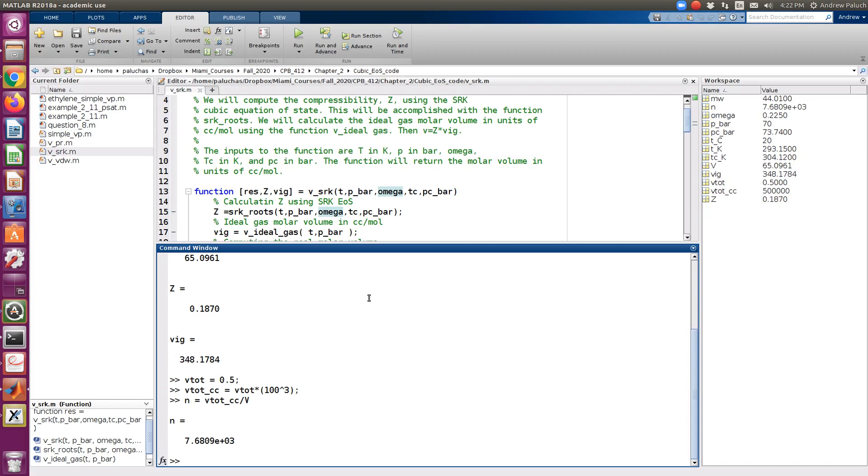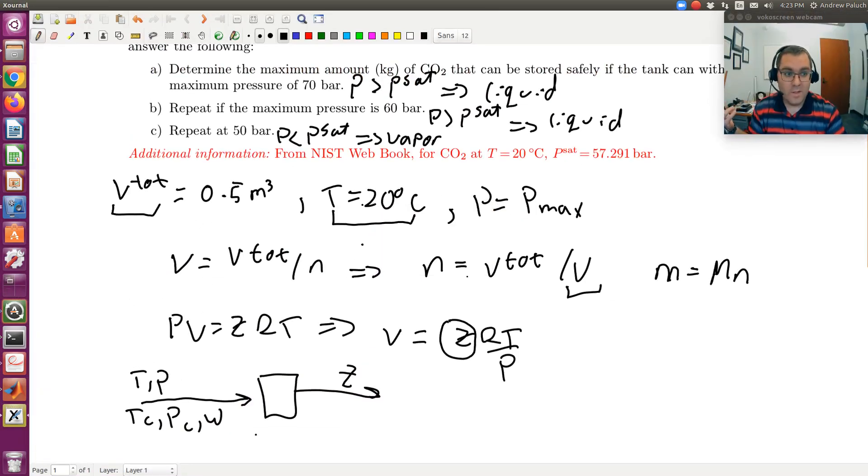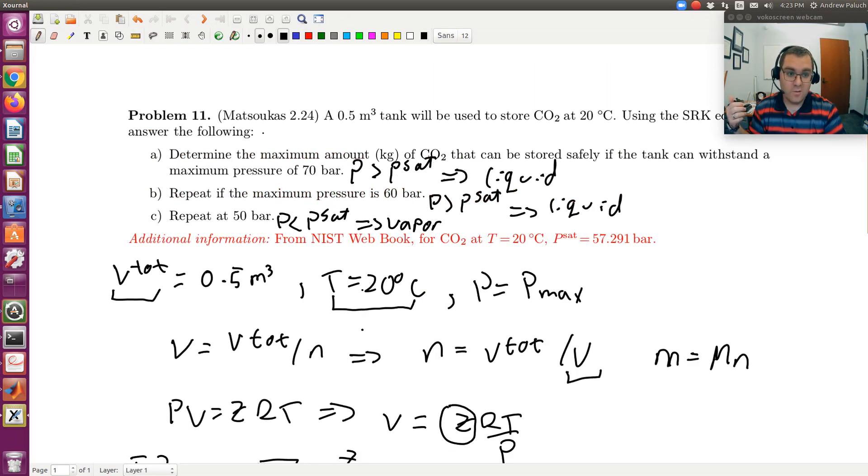Mass is going to be moles times molecular weight. And then divide by 1,000 to get to kilograms. So it looks like 338.0384 kilograms. Cool. So I have that. And then for the other problems, it's just a matter of updating. So chances are for B, since you're getting close to saturation, there's a good chance that you may get more than one real root. So if that's the case, you just need to choose the smallest one, which is liquid. And then C, if you get more than one real root, you just have to choose the largest one, which would give you a vapor phase. So larger, the largest molar volume or largest Z.